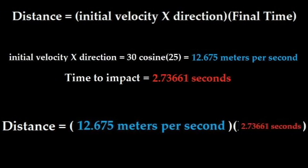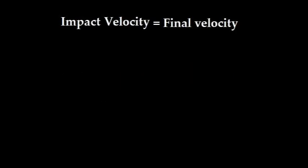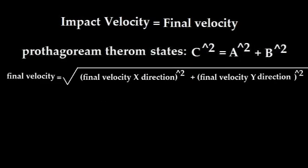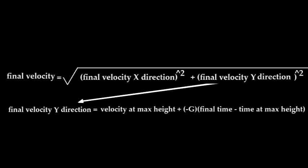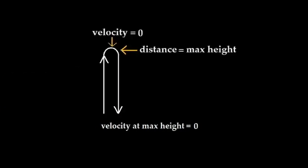We plug this final time into the distance equation and find that the distance is equal to 34.6960 meters. To solve for the impact velocity, the impact velocity is equal to the final velocity. With the Pythagorean theorem, the final velocity equals the square root of the final velocity in the X direction squared plus the final velocity in the Y direction squared. The final velocity in the X direction equals the initial velocity in the X direction, which we already calculated to be 27.1890 meters per second. The final velocity in the Y direction equals the velocity at maximum height plus gravity — a negative vector — multiplied by the difference between the final time and the time at maximum height. The velocity at maximum height is equal to zero, because when distance equals maximum height, velocity is then equal to zero.